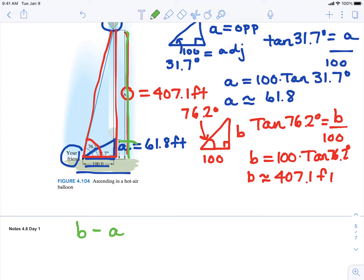And we want to take out that A where the balloon first traveled. So we'll take 407.1 feet, subtract 61.8 feet to get this distance right here.